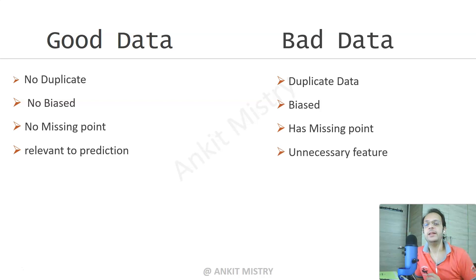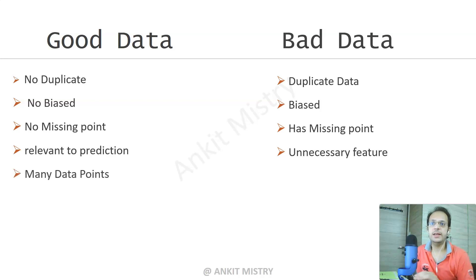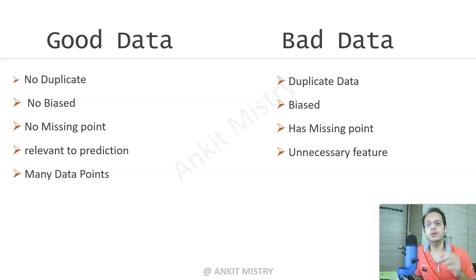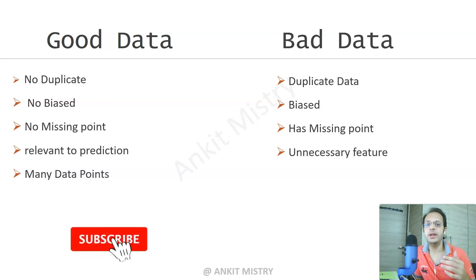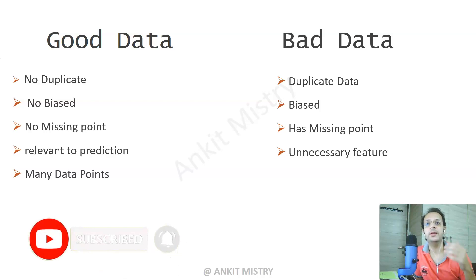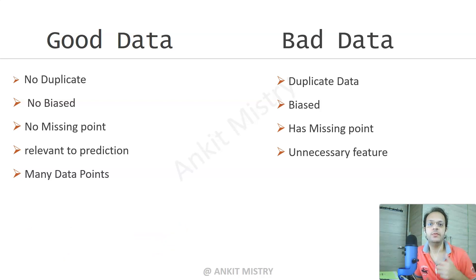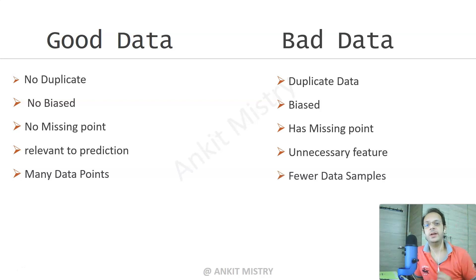In bad data, there are unnecessary features available for prediction purposes — they may be important for organizational purposes, but not for prediction. Good data also contains many data points. Nowadays data is like oil — if you have more data, you can create a better model. A good amount of data allows machine learning and deep learning algorithms to extract more meaningful patterns, whereas bad data has fewer data samples.